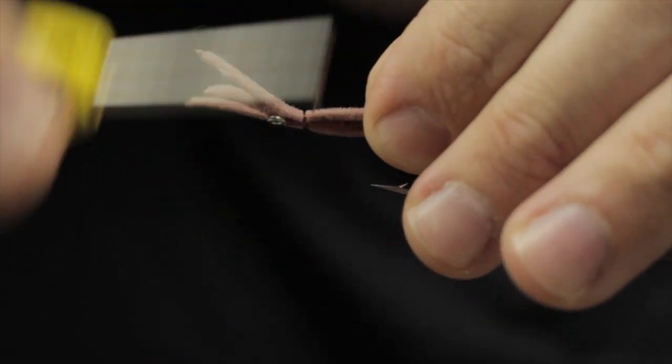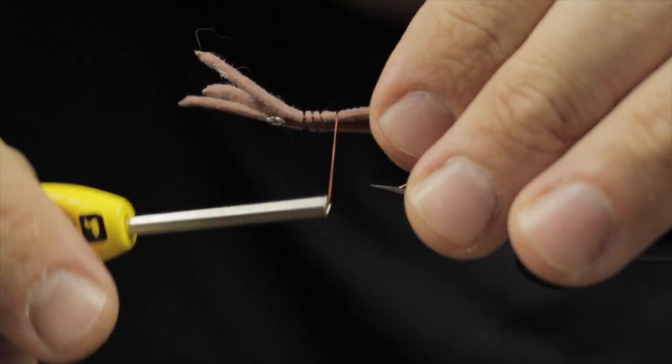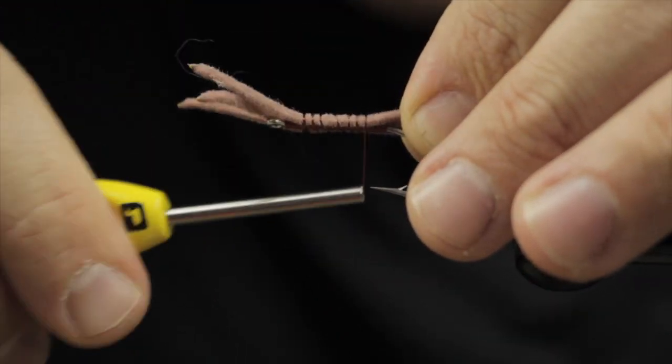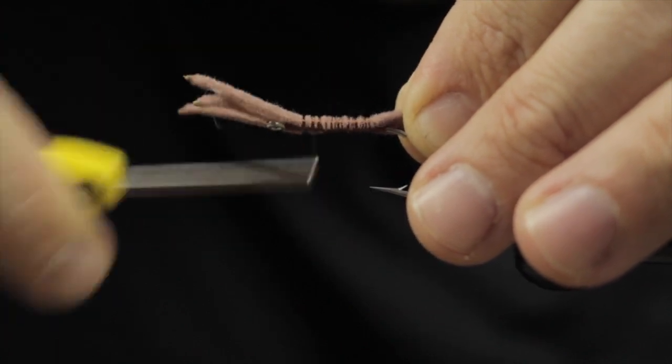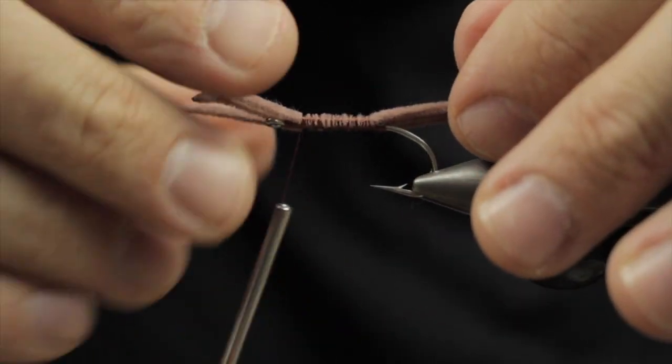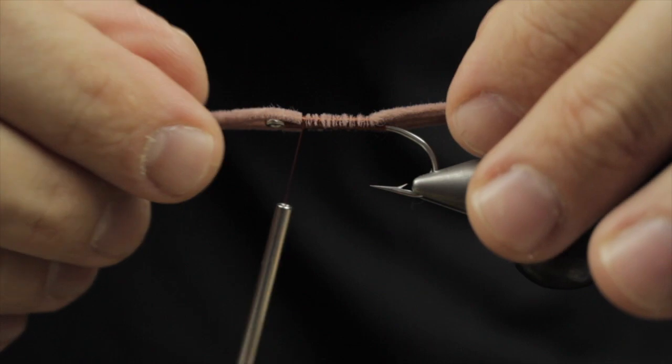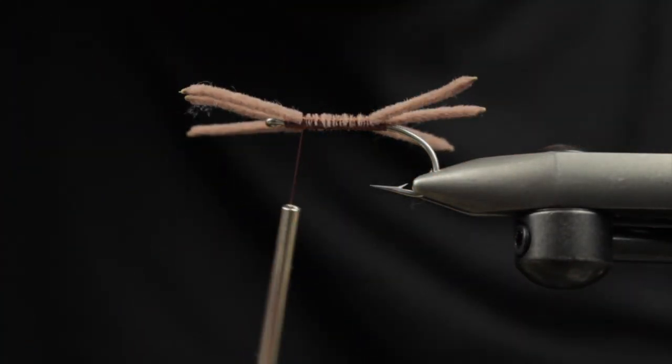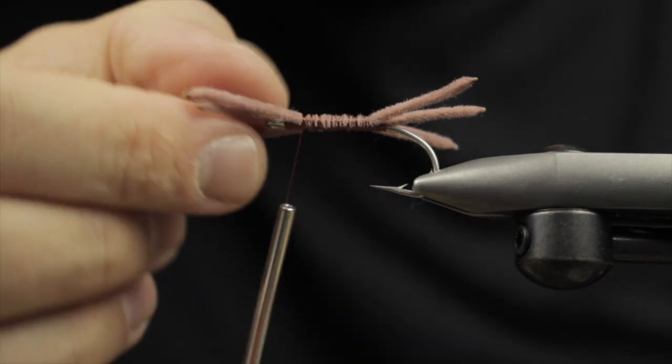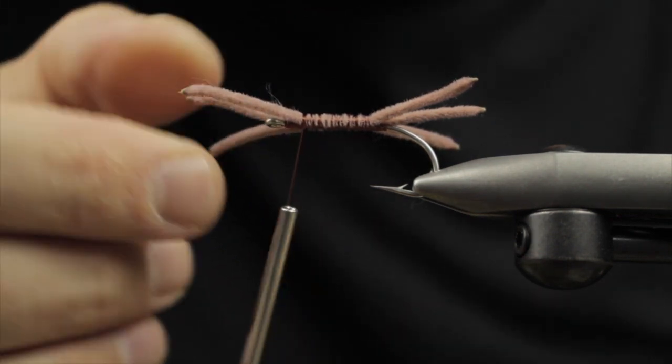Next up I'm going to take two more sets of legs and you can see I start my thread in about an eighth of an inch. Again I'm not concerned about the beauty or how everything lays out in there. This will all be hidden but the reason for the staggered tie-in points is because the legs are going to come out of the fly at a different area.